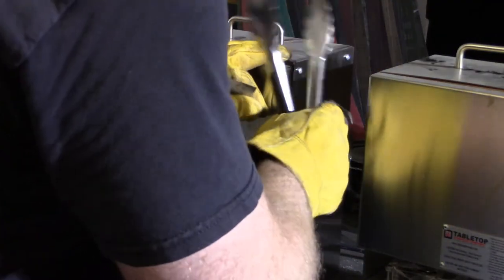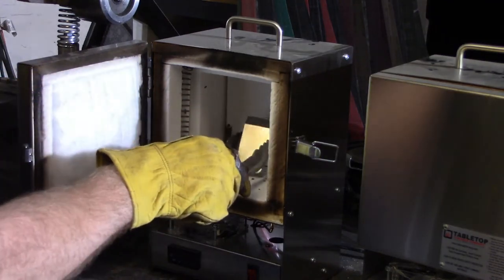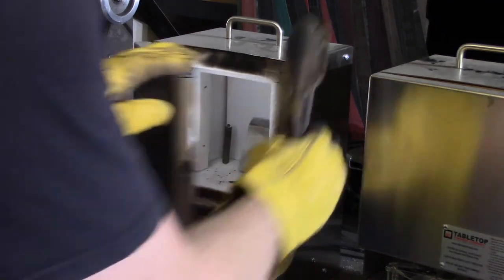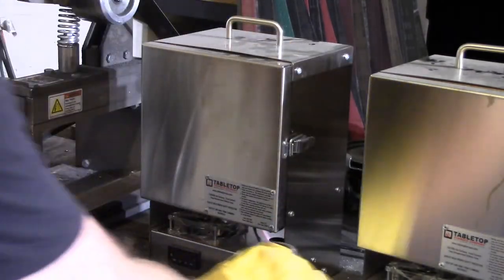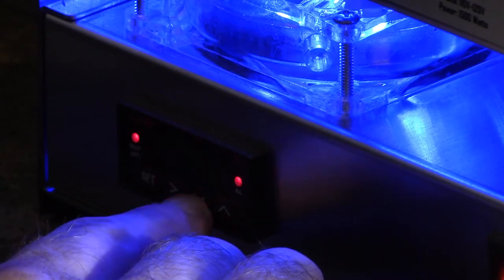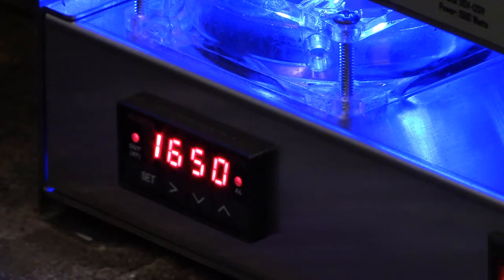I use my desktop kilns for heat treating because I can control temperatures to within just a couple degrees. I set the first kiln to 1650 degrees Fahrenheit, and I let the plane iron soak for 30 minutes.